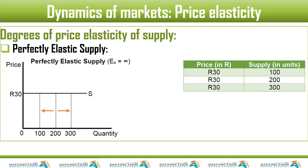This looks exactly like the demand curve in the case of perfectly elastic demand. So the demand curve would also be horizontal, but it will say D instead of S. These graphs look exactly the same — the only difference is the label: S for supply, D for demand. So if they give you two curves, it should be easy to tell which is which.